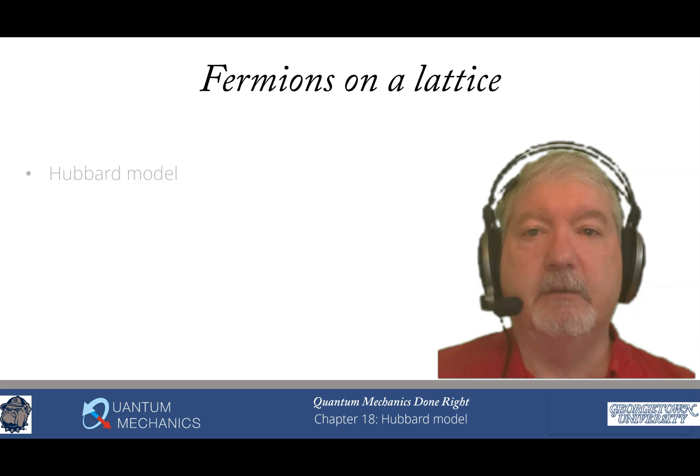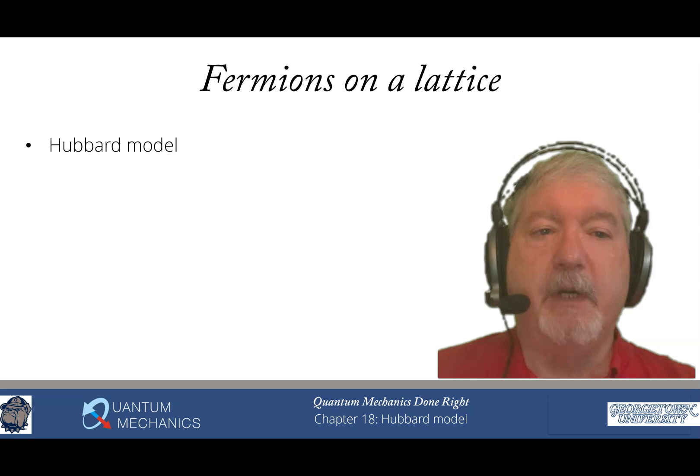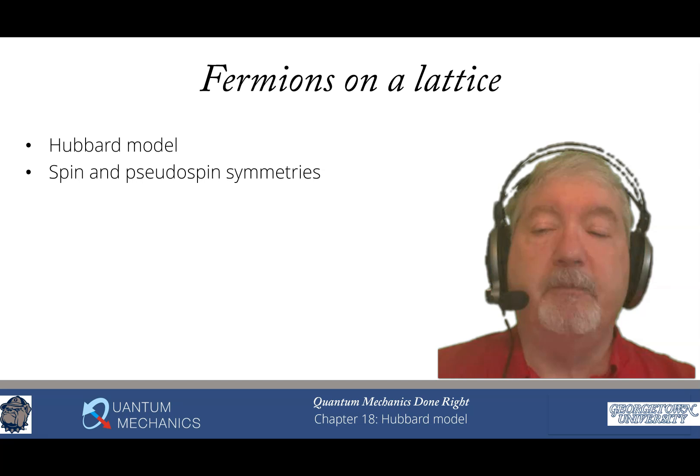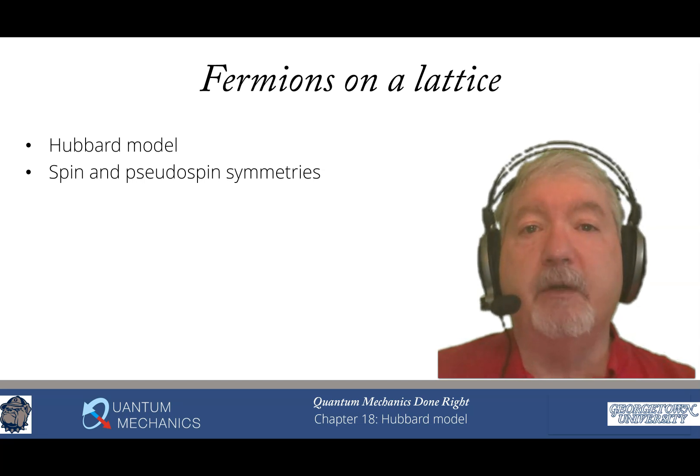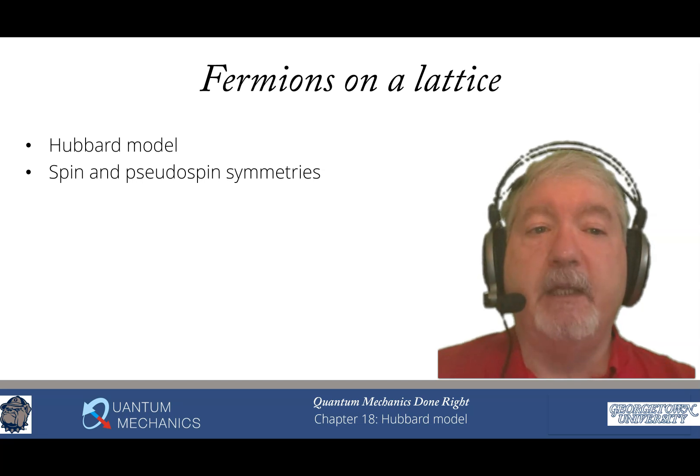Chapter 18: The Hubbard Model. We first introduce the model and look at different symmetries. There's spin symmetry because electrons don't flip their spin when they hop from site to site, so total spin, total angular momentum, and z-component of angular momentum are all conserved. There's also a pseudo-spin symmetry that only occurs with a bipartite lattice. It relates energy eigenstates that have additional pairs of electrons—they have the same energy as with one fewer pair, but the energy is reduced by exactly U.